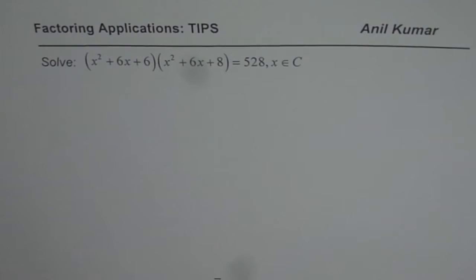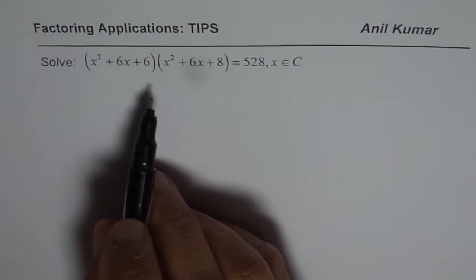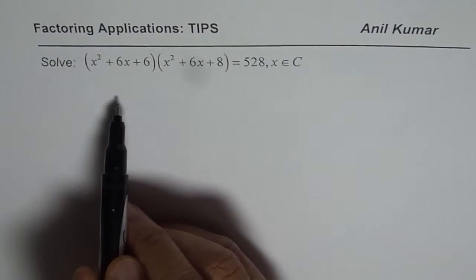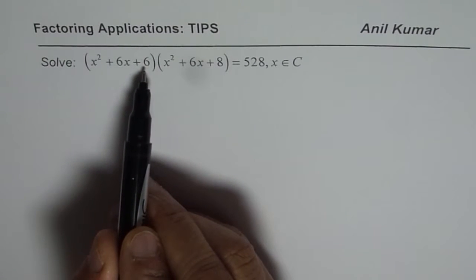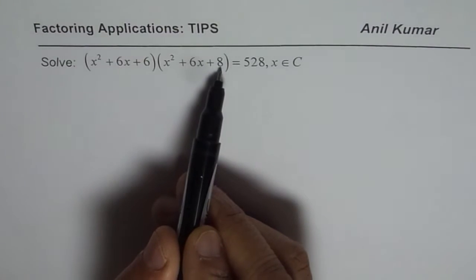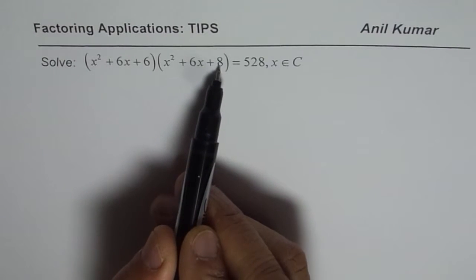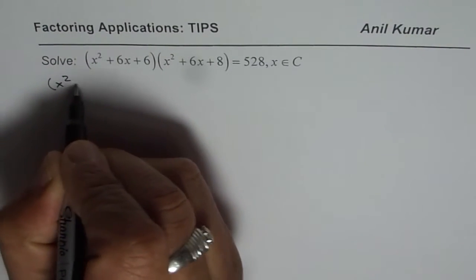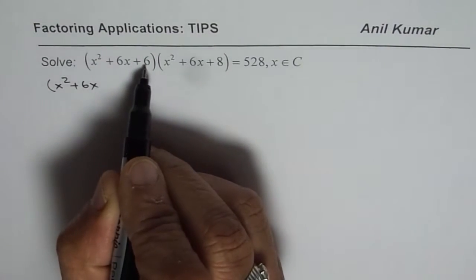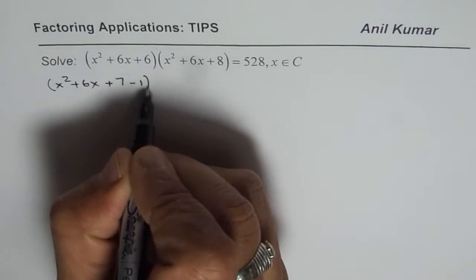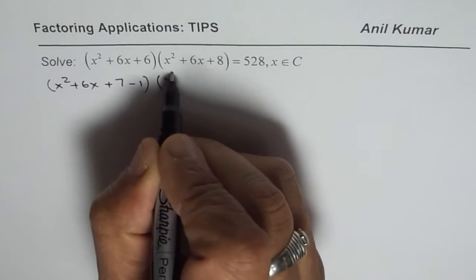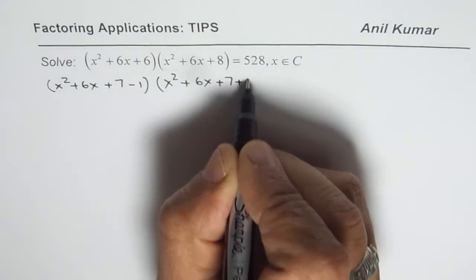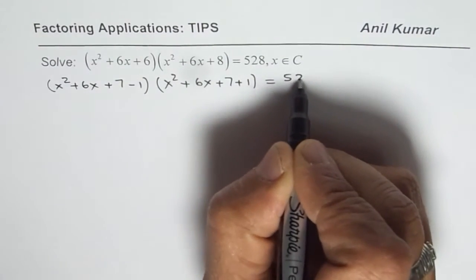Now let's begin to solve this. In such equations we have a new strategy. We know x squared plus 6x is common, but if we write 6 as 7 minus 1 and 8 as 7 plus 1, see what happens. So instead of 6 we write 7 minus 1, and instead of 8 we write 7 plus 1. The right side remains 528.